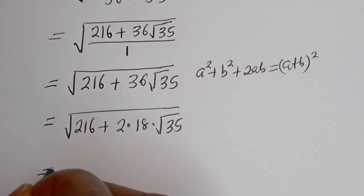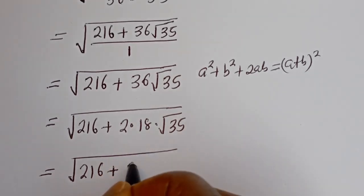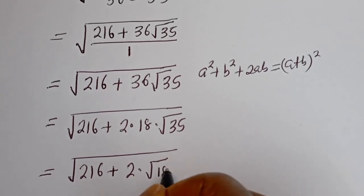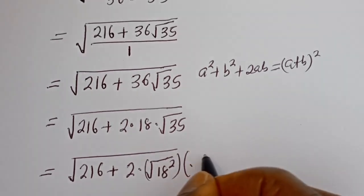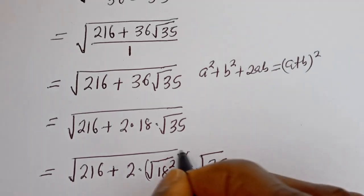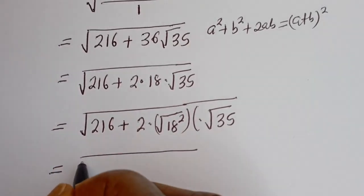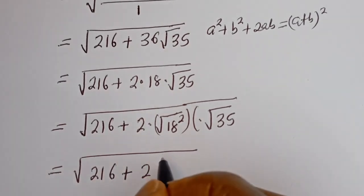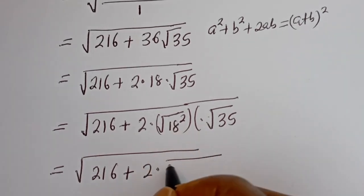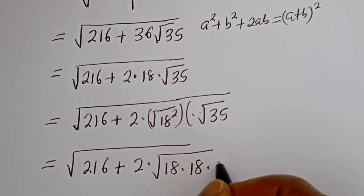Now this is equal to square root of 216 plus 2, and we can write 18 as square root of 18 squared, then multiply by square root of 35. And 35 can be written as 5 multiplied by 7.